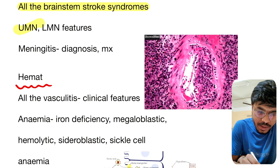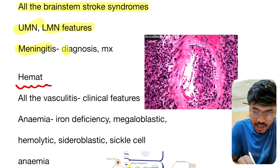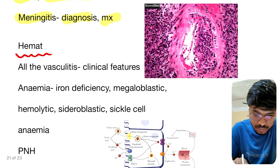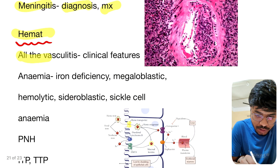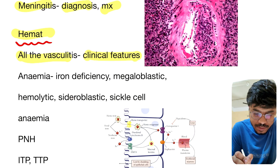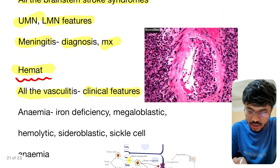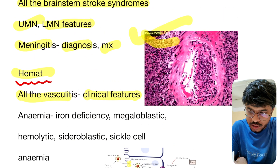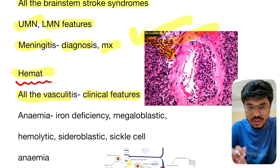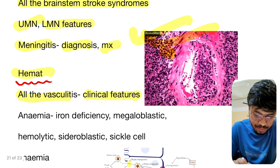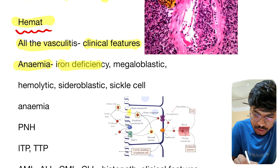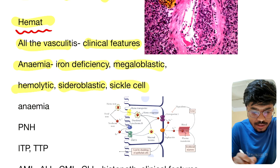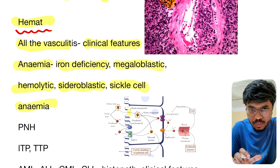UMN and LMN features, meningitis diagnosis and management — important. From hematology: all the vasculitis clinical features and histopathology are all important. This is a histopathology picture of polyarteritis nodosa (PAN). Anemia — iron deficiency anemia, megaloblastic anemia, hemolytic anemia, sideroblastic anemia, sickle cell anemia — all are important.